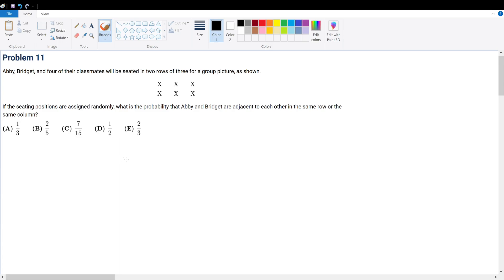Let's solve it directly. To do that, let's have x, x, x, and x, x, x. These represent the possible seating positions.